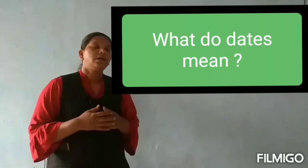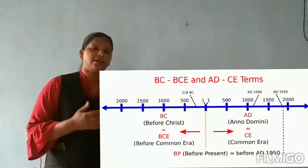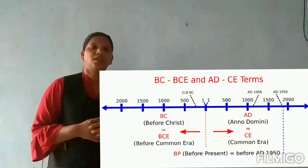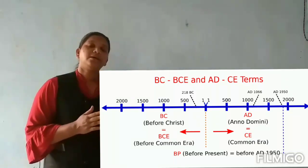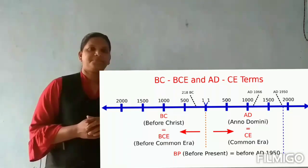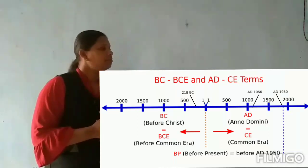What do dates mean? When someone asks you the date, you will probably mention the date, month, and year. In present times, almost all the world follows the western chronology to keep a record of events. According to it, the period which began after the birth of Jesus Christ is termed as Anno Domini or A.D., meaning 'the year of the Lord.' All dates before the birth of Christ are counted backwards. For example, 2000 A.D. means 2000 years after the birth of Christ.